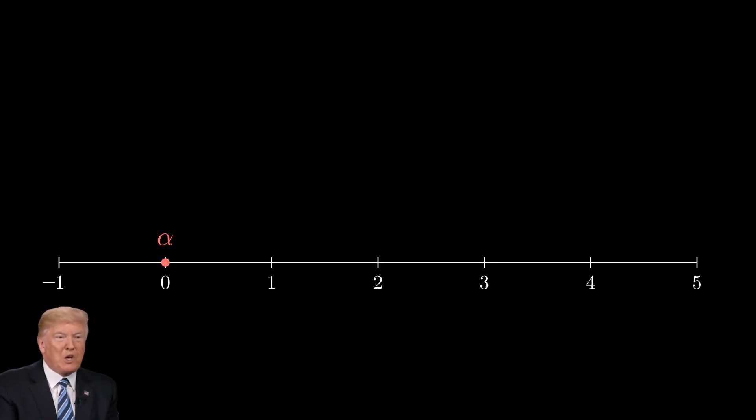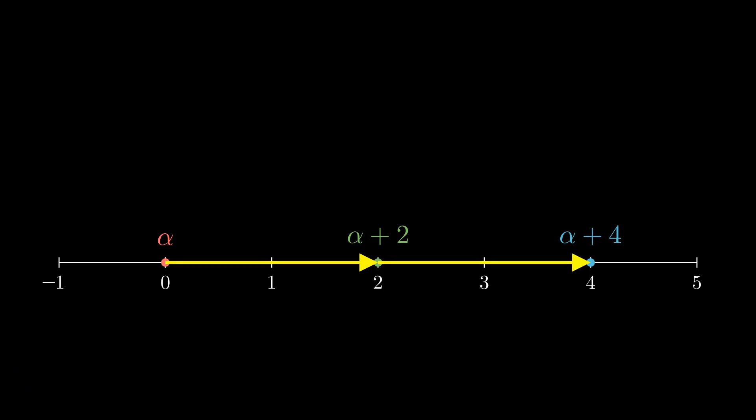So working on alpha is equivalent to working on alpha plus 2, which is equivalent to alpha plus 4, and we can do this infinitely many times. For the real numbers on the left, working on alpha is also equivalent to working on alpha minus 2. So working on alpha between minus 1 and 1 is actually enough, because this way we cover all real numbers.